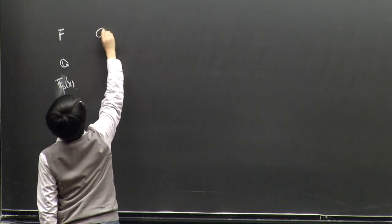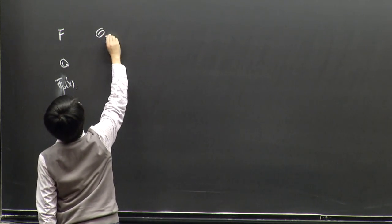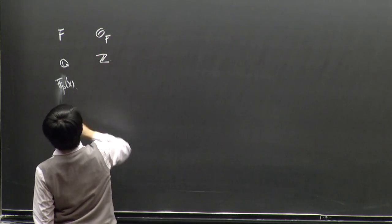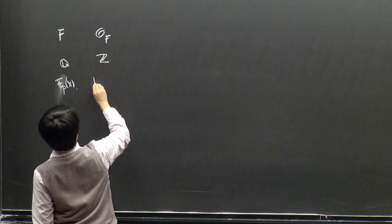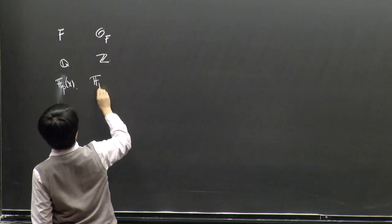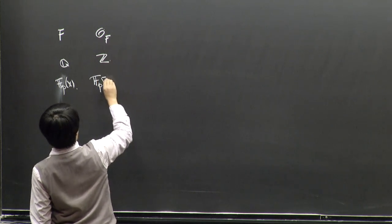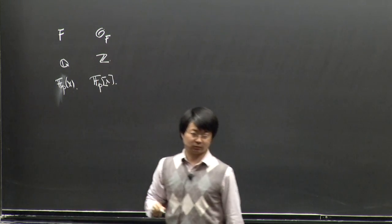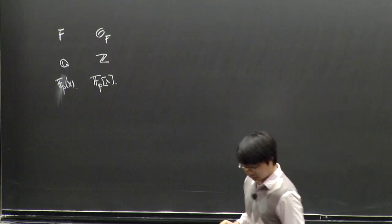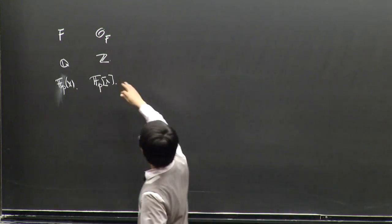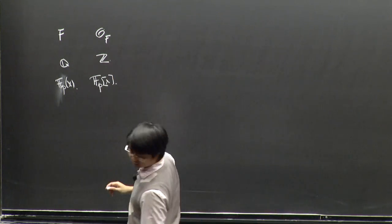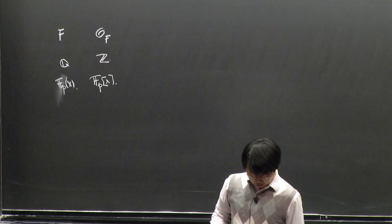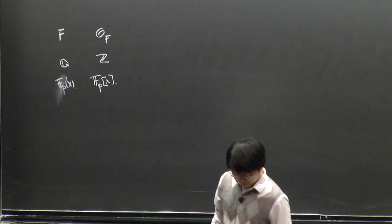We have a ring of integers, which is just ℤ. You can think of this as a polynomial ring of one variable with coefficients in 𝔽_p. In both cases, they are unique factorization domains — UFDs, in fact.